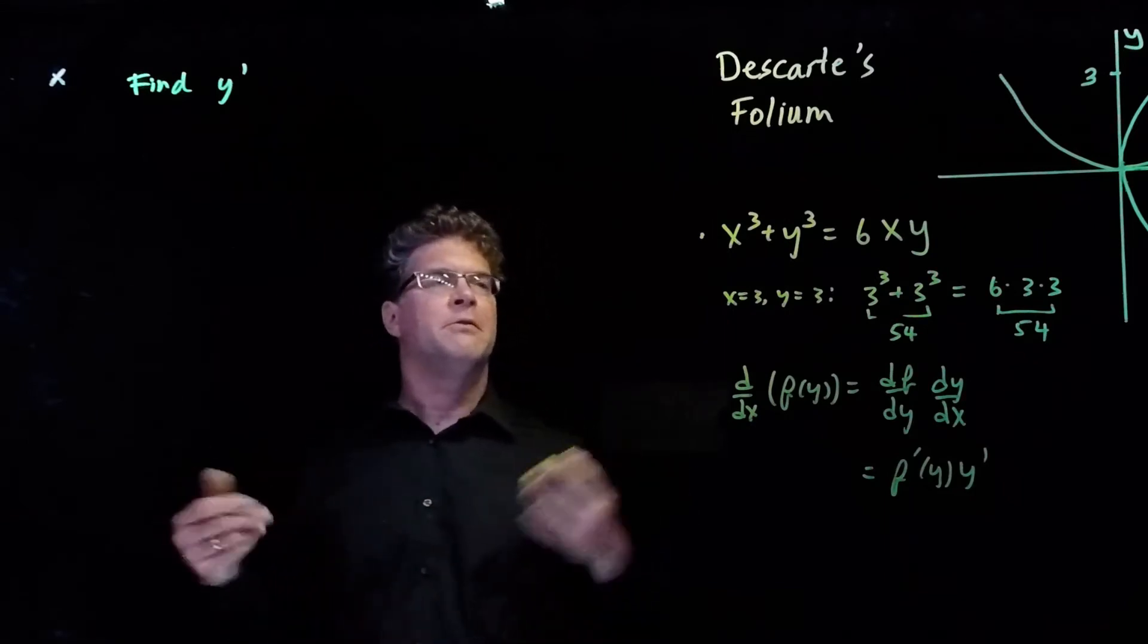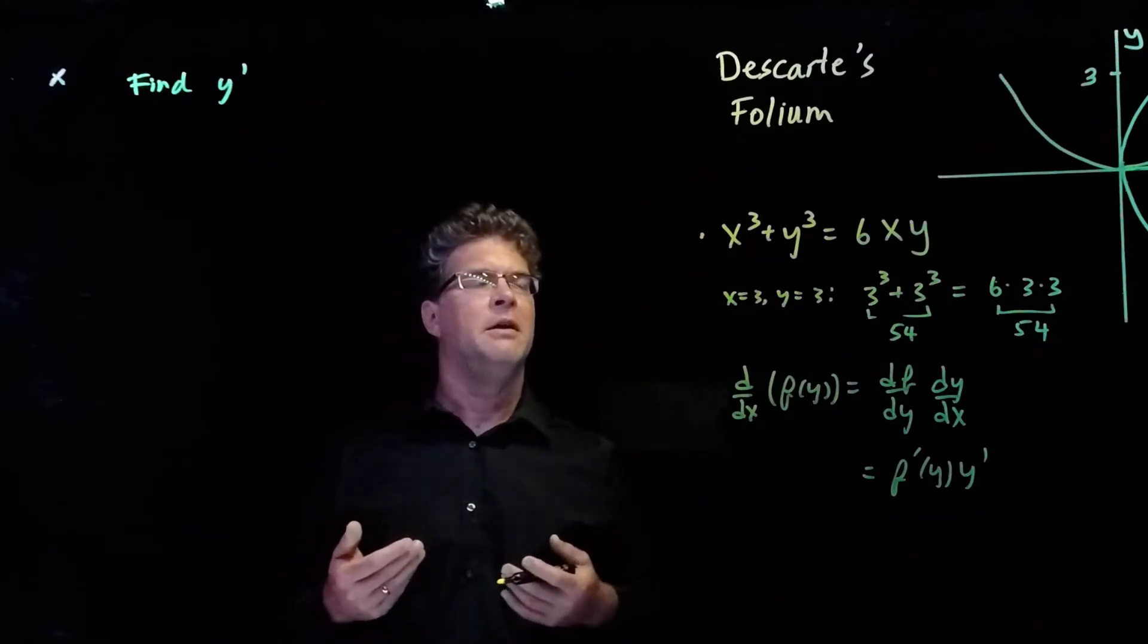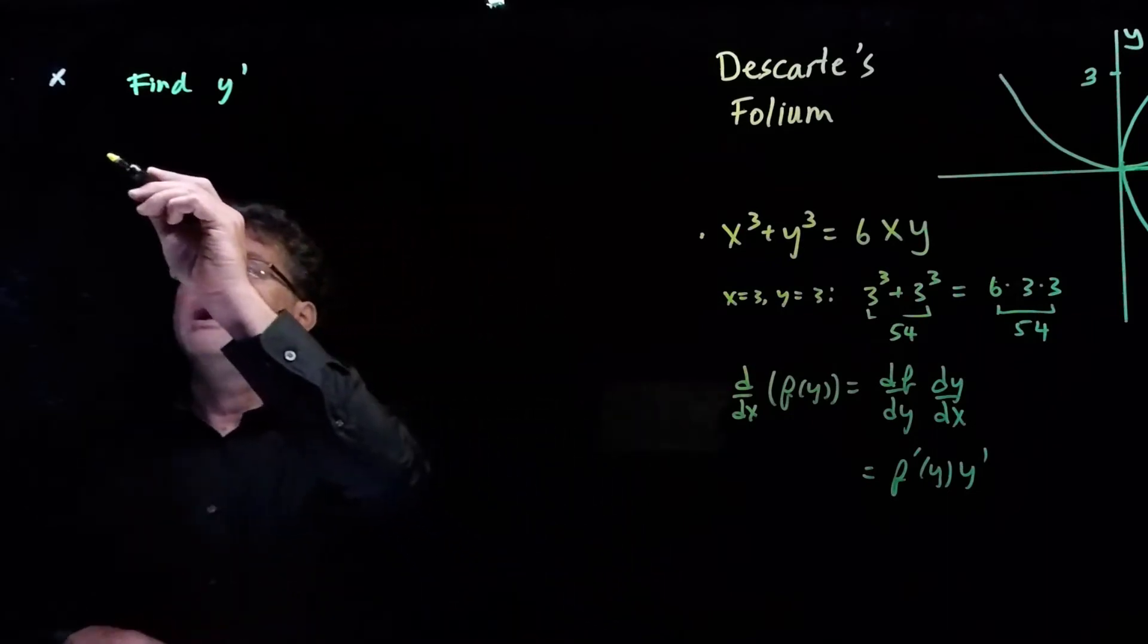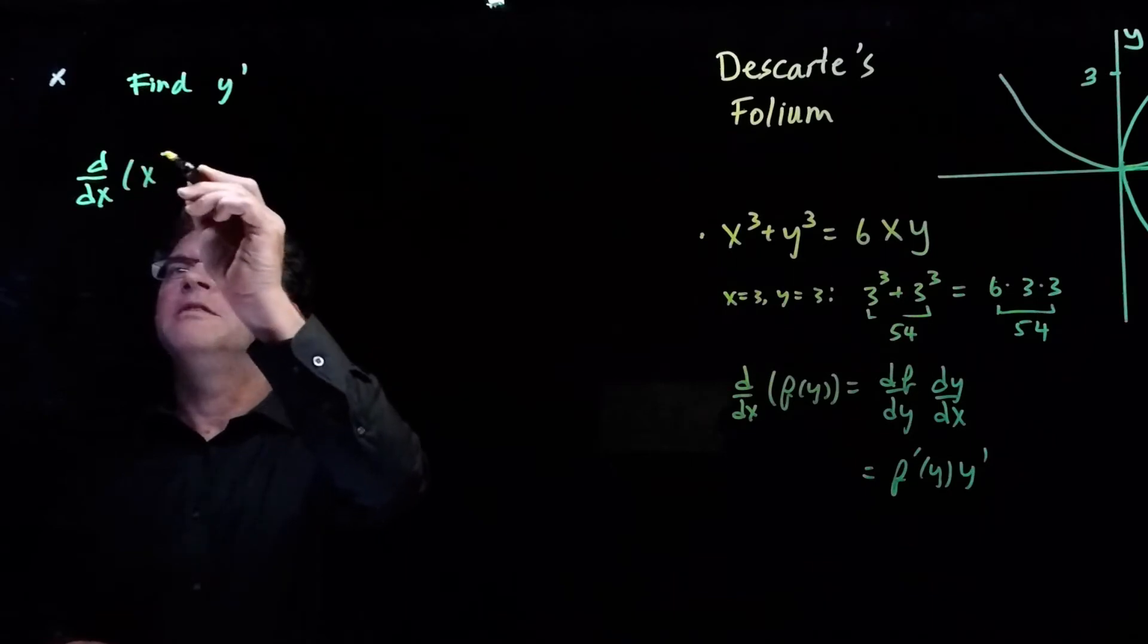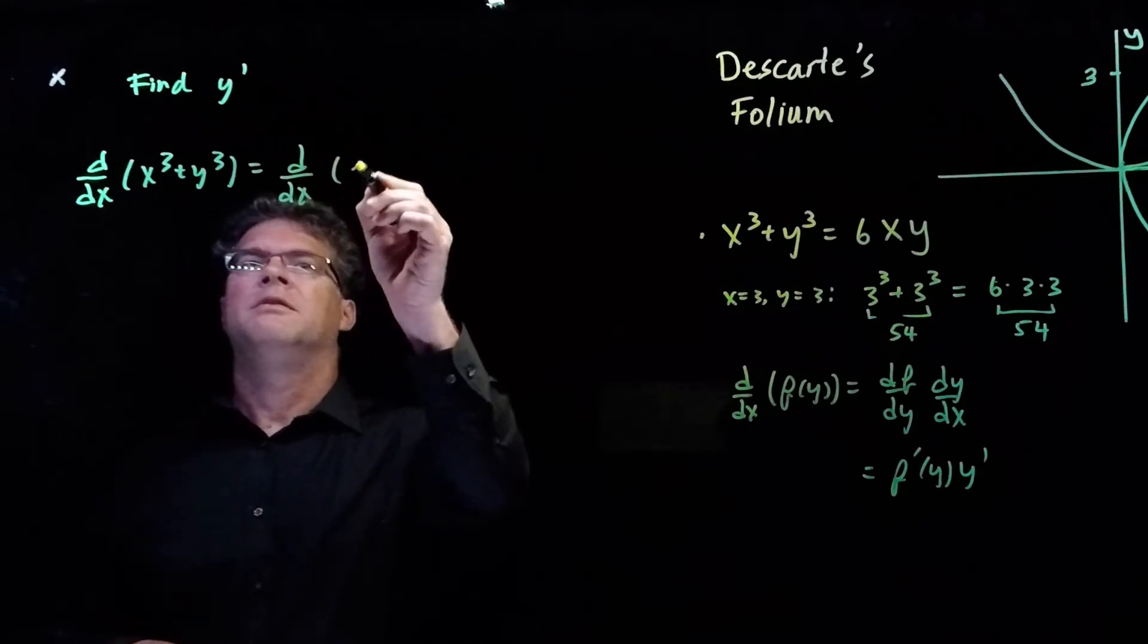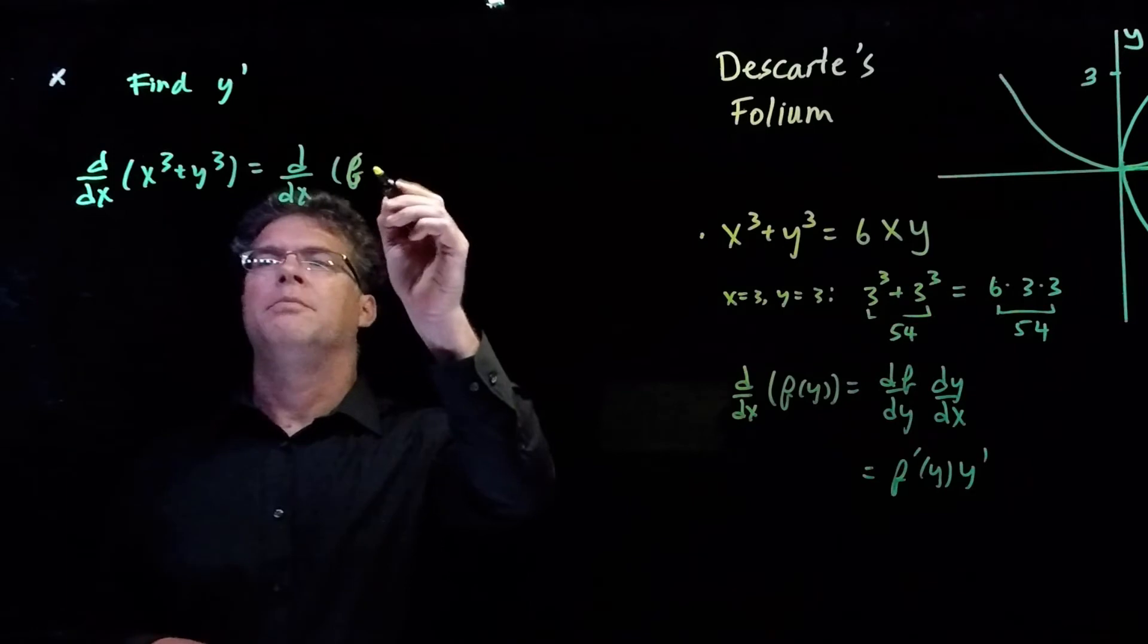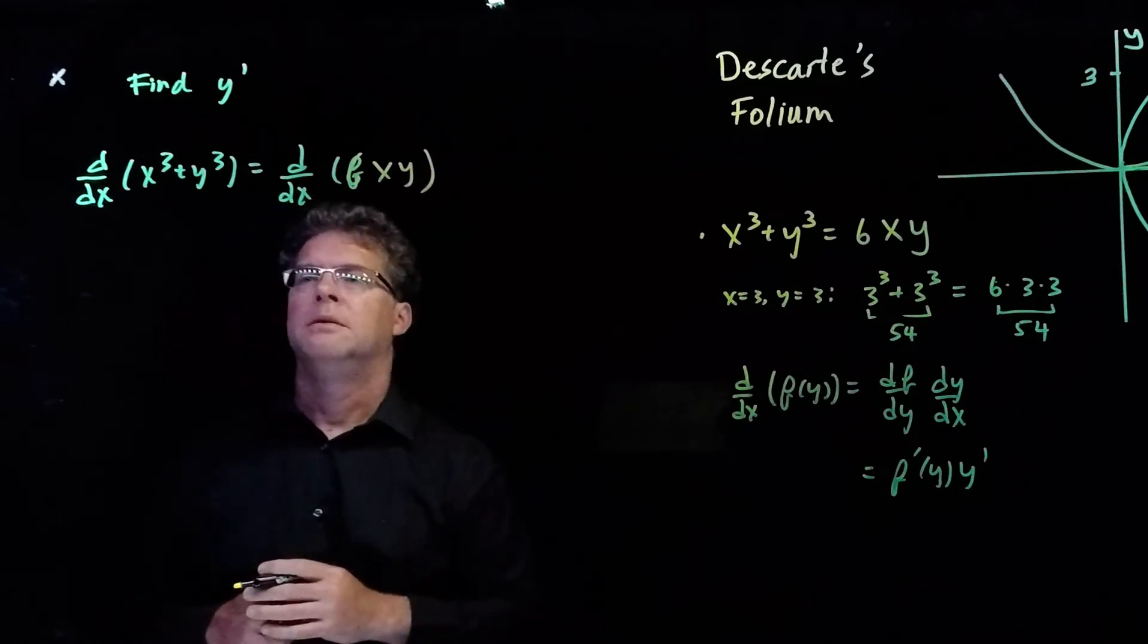So when we do implicit differentiation, we differentiate on both sides of the equal sign, and then we use the chain rule. We have the derivative with respect to x of x cubed plus y cubed is equal to the derivative with respect to x of 6xy.